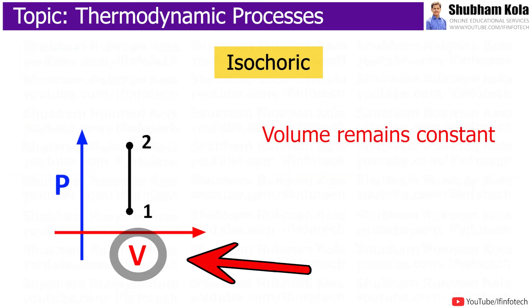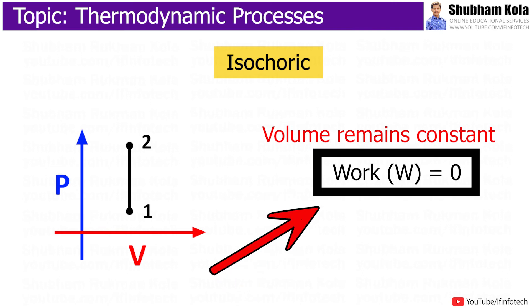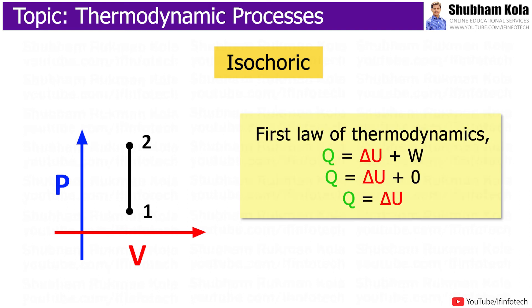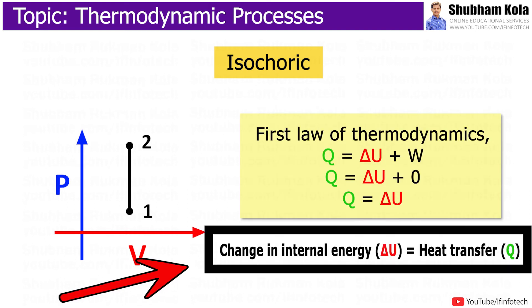In isochoric process, the volume remains constant. Therefore, system does not do any work. Such process in which there is no change in volume can be achieved by placing thermodynamic system in closed container, which neither contracts nor expands. Thus, from the first law of thermodynamics, change in internal energy becomes equal to heat transfer.